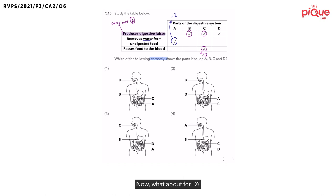Now, what about for D? D is able to produce digestive juices. So, this means that B and D must be able to carry out digestion. Now, besides the small intestine, what are the two other organs that can carry out digestion?